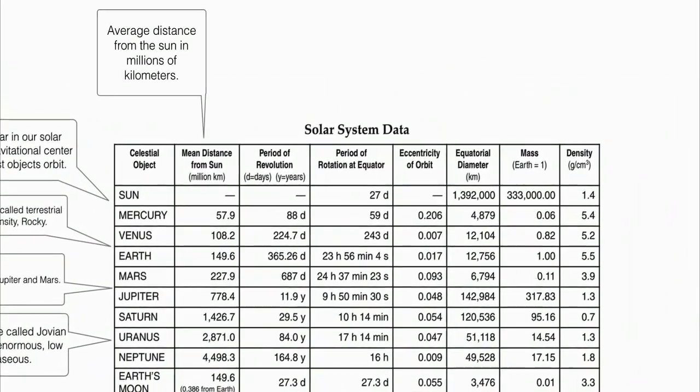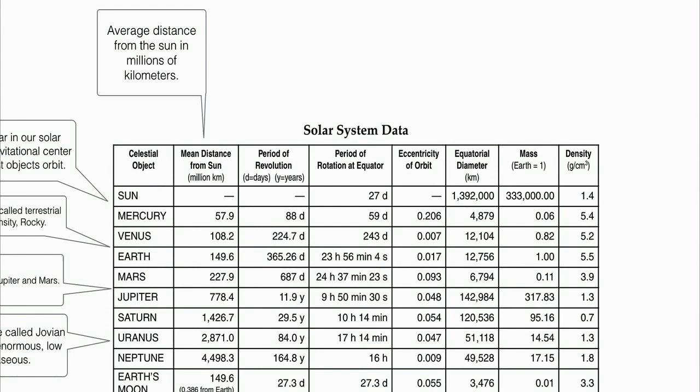Let's move up to the top of the table. This first column is the mean distance from the sun — on average, how close these planets are to the sun. Notice it's a mean distance, an average, because they're elliptical orbits. There's a time where they're closer and a time where they're further away. It's also listed in millions of kilometers, so Mercury at 57.9 is really 57,900,000 kilometers.